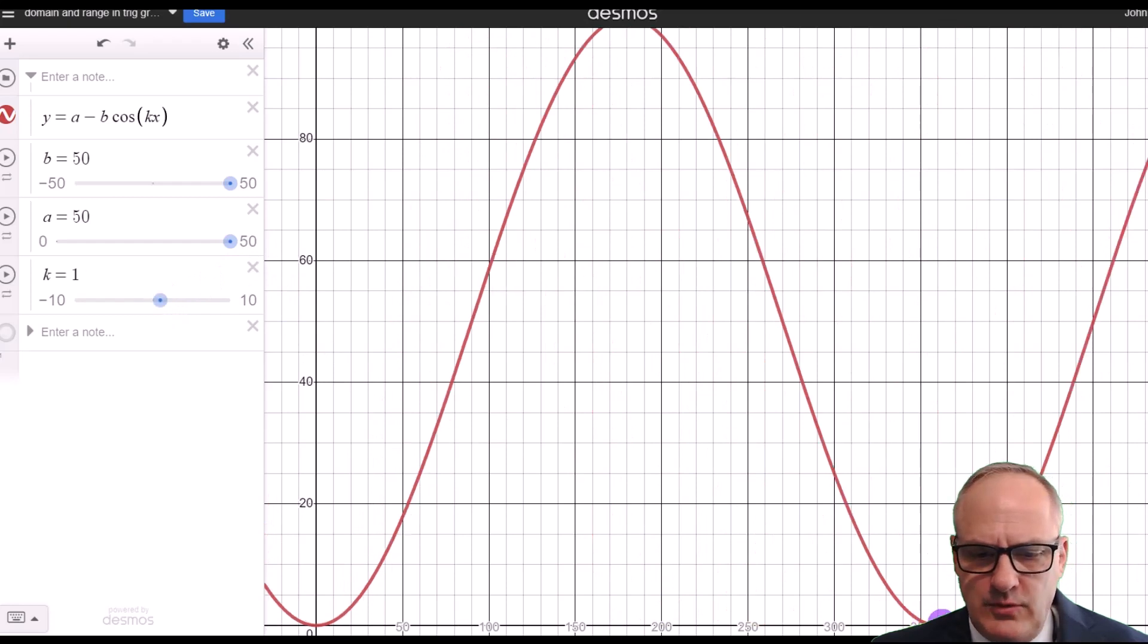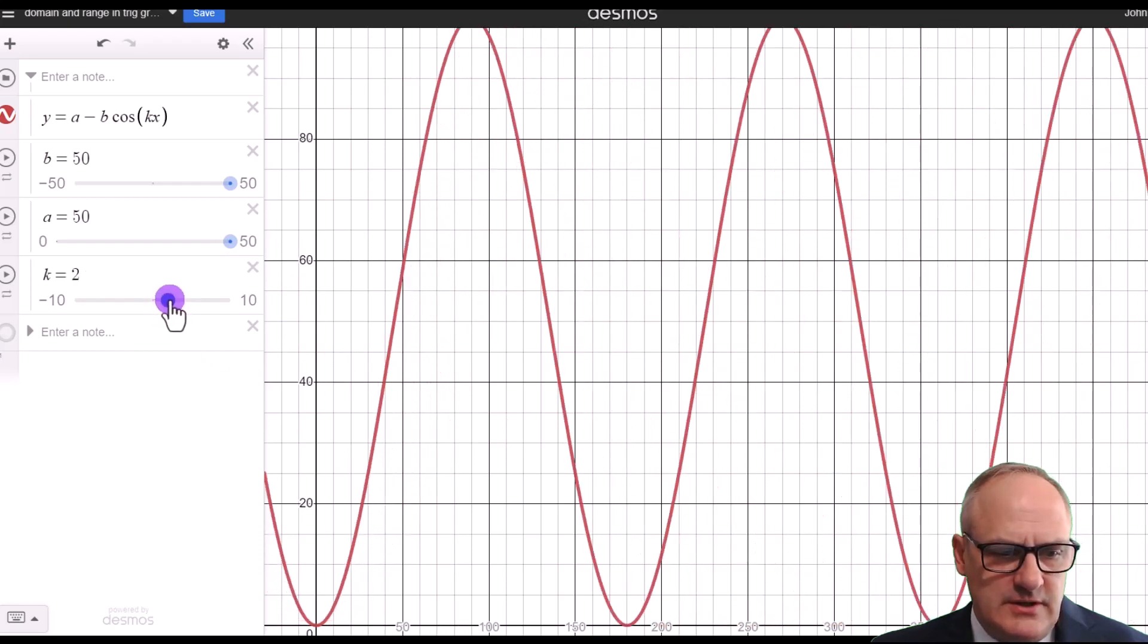If we go to k is 2, we now have two oscillations by the time we get to 360. So the k factor depends on how many oscillations we're going to fit in by 360.